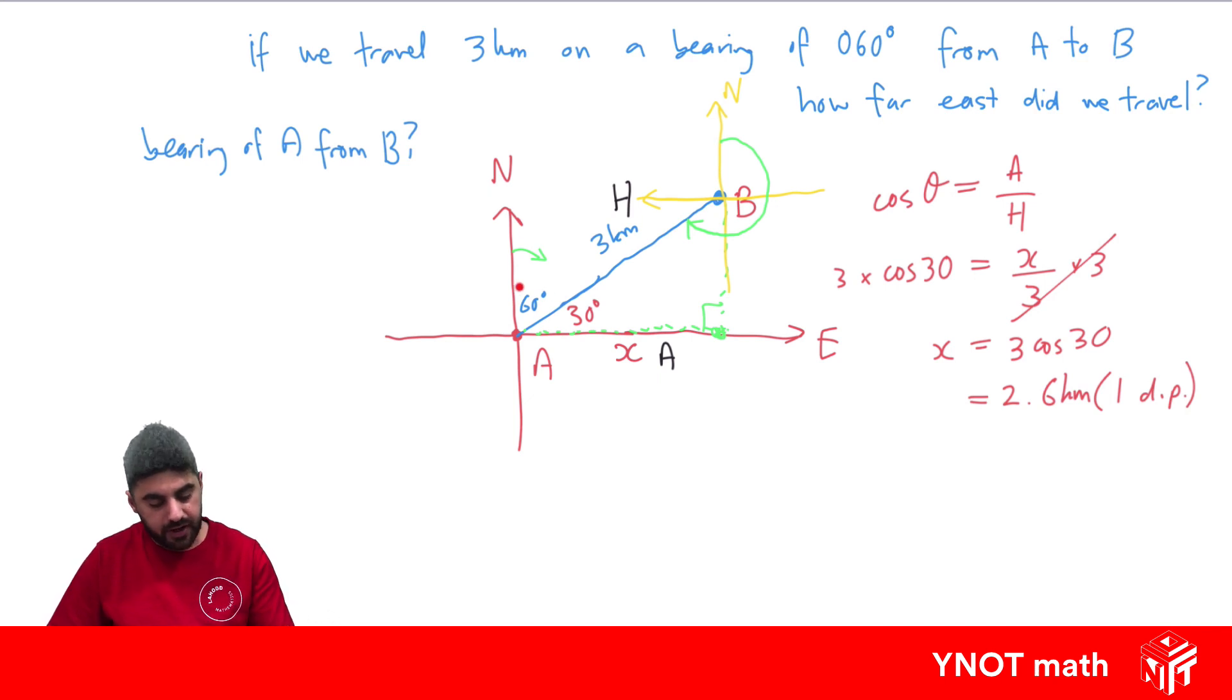Using alternate angles, if this is 60, this has to be 60 as well. We know this is 180, so our bearing is going to be 180 plus 60, and we get 240 degrees.